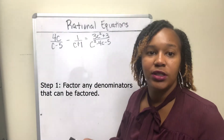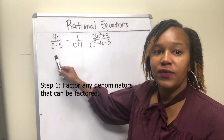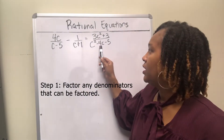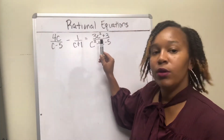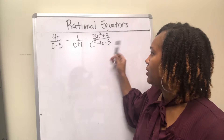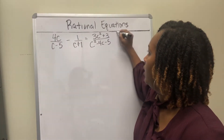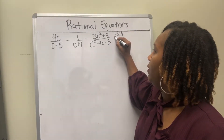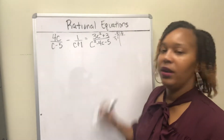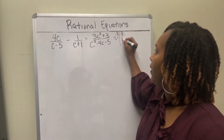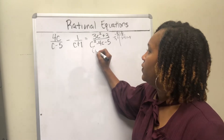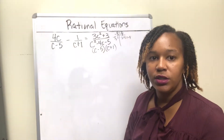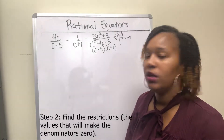Now try the practice problem. The first thing is to factor any denominators that can be factored. c minus 5 cannot be factored, c plus 1 cannot be factored, but c squared minus 4c minus 5 can be factored. It's a trinomial with a leading coefficient of 1, so take factors of negative 5 that add to negative 4. That would be negative 5 and 1: negative 5 times 1 is negative 5, and negative 5 plus 1 is negative 4. So this factors into (c minus 5)(c plus 1).